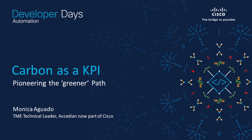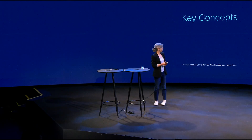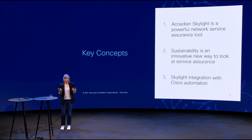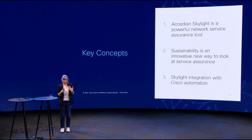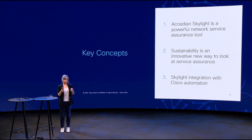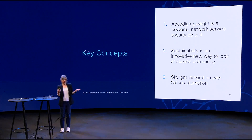As we were talking about sustainability, I will be talking about three main concepts during my presentation. One is how Occidian Skylight is a very powerful network service assurance tool. How sustainability can be part of this assurance, a new way of looking at assurance, and how we can leverage automation by putting all this together.